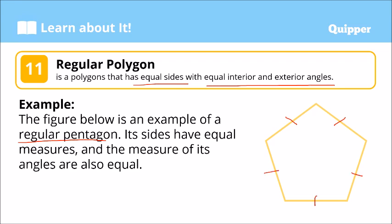The single tick mark on the sides means they have equal measurements — kung five units yan, five din ito, five, five, five. And the double tick marks indicate equal angles — itong mga interior angles niya are all equal as well as the exterior angles. We use two tick marks for angles so they're distinct from the one tick marks used for sides. So, regular pentagon.